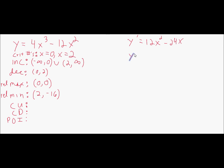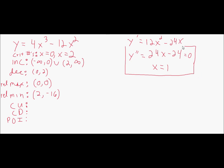Y double prime is 24x minus 24. The second derivative equals zero at x equals one — and it's never undefined. So x equals one is the only point where the second derivative changes sign. Even though x equals one is not a critical number of the function, it plays a similar role — we just found it from the second derivative. Make a number line labeled y double prime and put one on it.